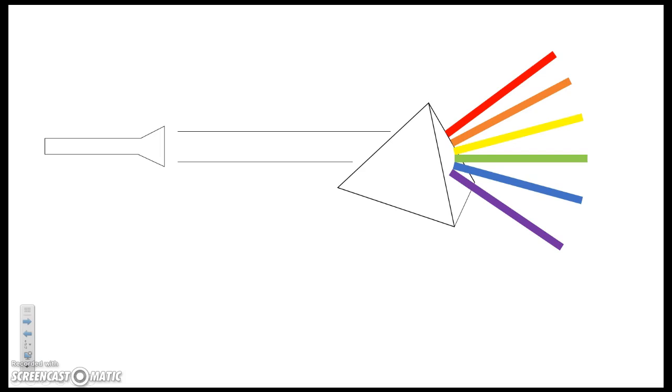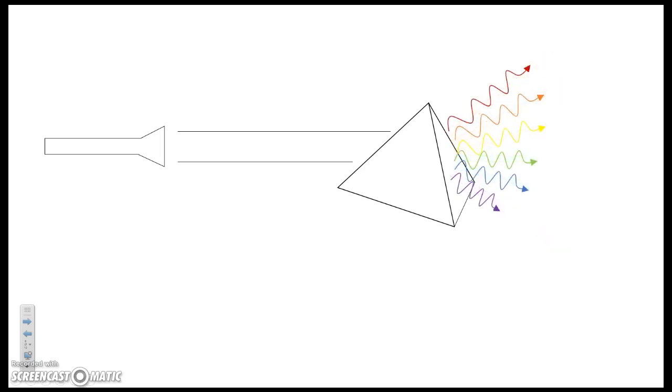When we do our experiment, different colors come out of the prism. But each color is a different frequency. And so the photons will not have the same frequency. They'll be different. This photon of purple light has a higher frequency because the crests are closer together. And as we go down the line, we see the frequency is decreasing.